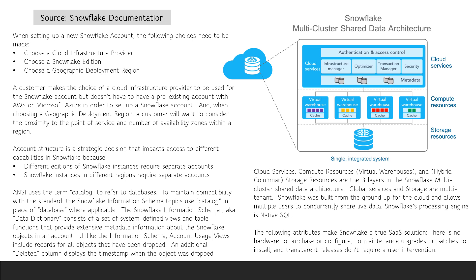The Snowflake multi-cluster shared data architecture has three layers: the cloud services layer, the compute resources layer — which is sometimes called the virtual warehouses layer — and the hybrid columnar storage layer. The services and storage layers are multi-tenant. Snowflake was built from the ground up for the cloud and allows multiple users to concurrently share live data. Snowflake's processing engine is native SQL.